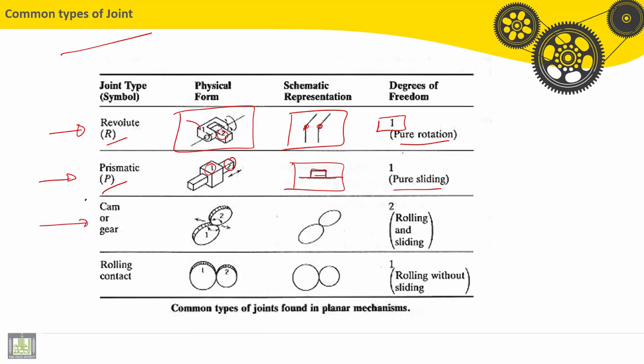Third one is a cam or gear contact. Here we have, for example, the gear number one, here gear number two. So the schematic representation will be two circles in contact. So we have two degrees of freedom, rolling and sliding.